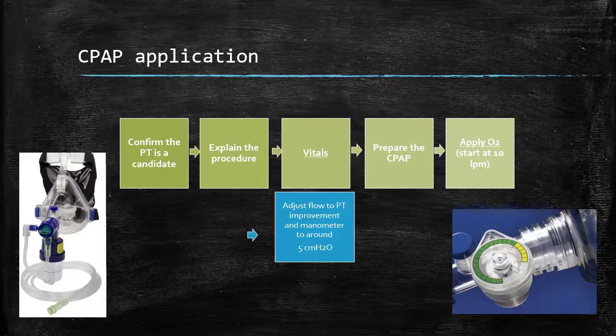We need to convince them that this is going to be the best thing for them because it can be a little scary. We have a patient who is having a hard time breathing and we're going to put a mask over their face — that can be really scary, especially a patient in respiratory distress. So we need to sell it to them. Once we sell them on the device, let's get a set of vitals, and hopefully a partner can be getting vitals while we're explaining and setting up the device at the same time.